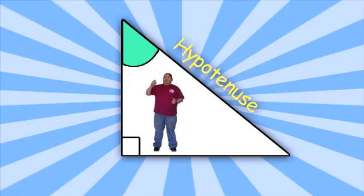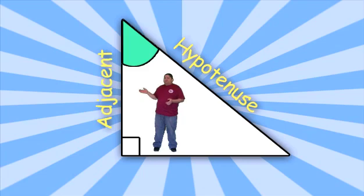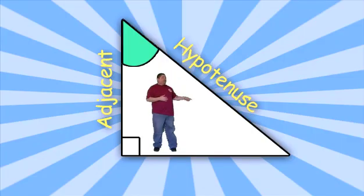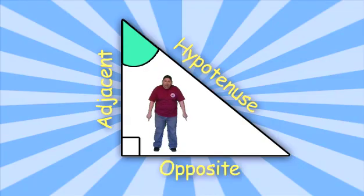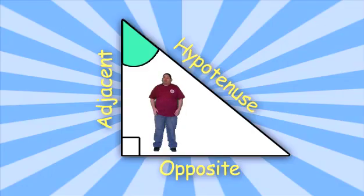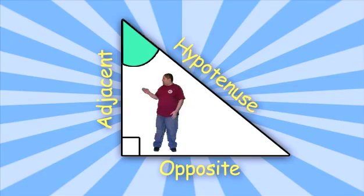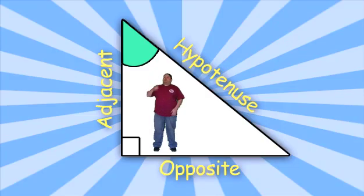Now the name of the other two sides depends on which angle we are talking about. Say for example we are talking about this green angle. This side is next to it — another word for next to it is adjacent. This side is adjacent to the green angle. This side is still your hypotenuse, which makes the bottom side opposite to the green angle. So there you have it: hypotenuse, adjacent, and opposite, when we are talking about the green angle.